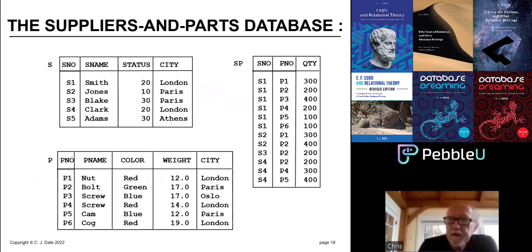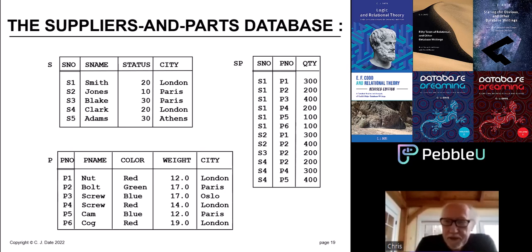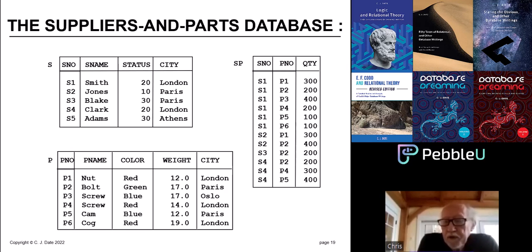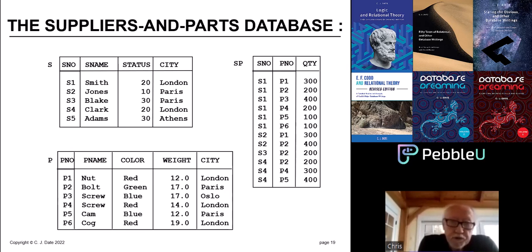Here is a picture of a relational database — the famous suppliers and parts database. I'm sure you didn't expect any presentation from me without seeing the suppliers and parts database sooner or later. We're going to use this as the basis for many examples, so I recommend you print off this slide and keep a paper copy available to refer to as we go on. This database has suppliers S, parts P, and shipments of parts by suppliers SP. For example, supplier S1, called Smith, is supplying part P1, which is a nut, in a quantity of 300.